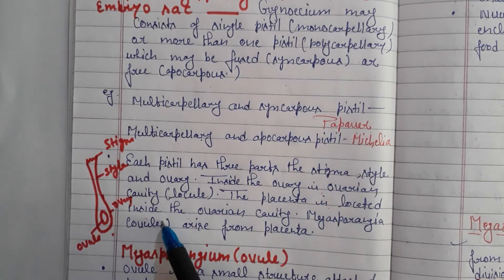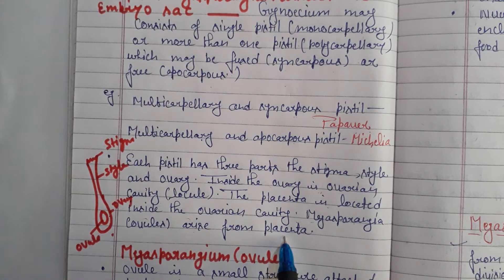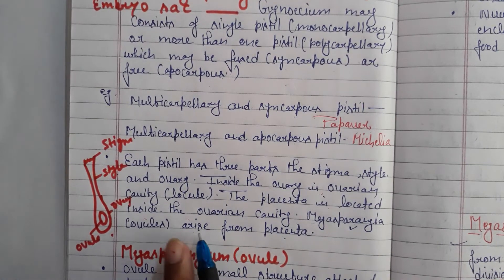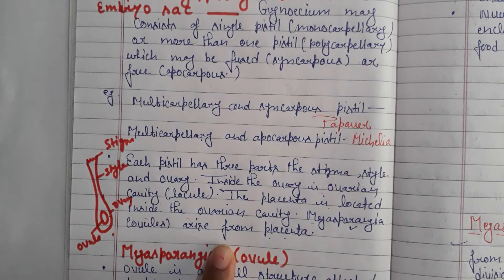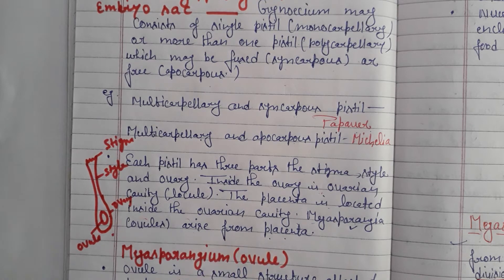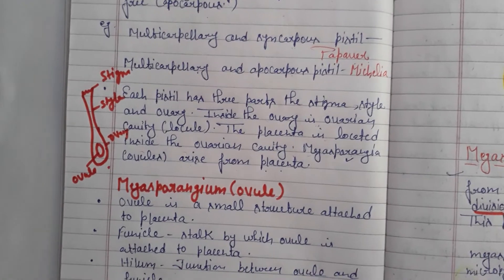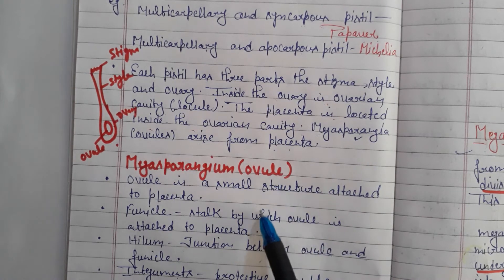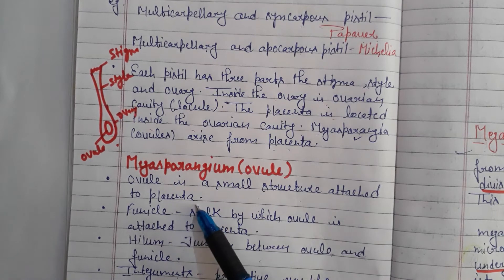The placenta is located inside the ovary cavity. The megasporangium or ovules arise from the placenta. The placenta is the connecting link between the mother and the baby. The megasporangium — that is, the ovule — is a small structure attached to the placenta.